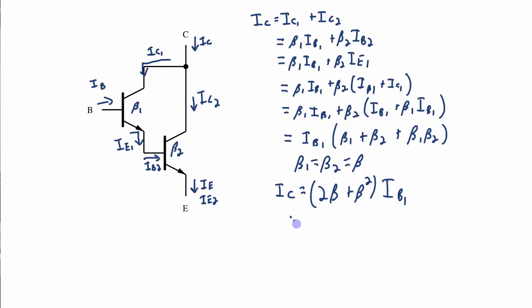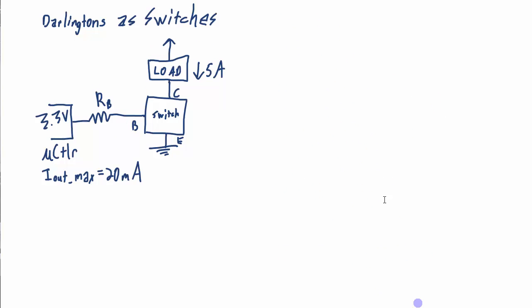So this term is going to be much smaller than beta squared. So what I could say then is IC is approximately equal to beta squared IB. Or I can say the beta D where this is the beta of the Darlington transistor times IB. So this Darlington transistor beta is going to be much bigger than the beta of a single NPN transistor.